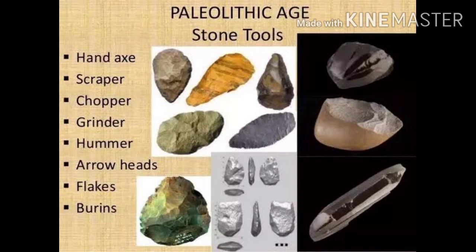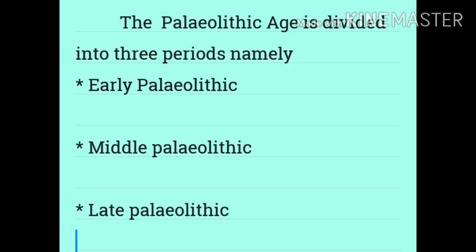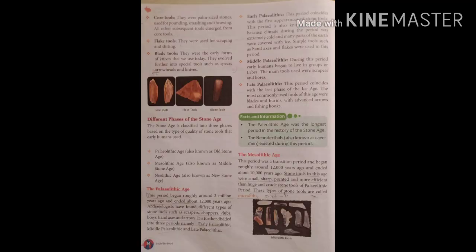The Paleolithic Age is divided into three periods: Early Paleolithic, Middle Paleolithic, and Late Paleolithic. The Early Paleolithic period coincides with the first appearance of stone tools. This period is also known as the Ice Age, because during this time the climate was extremely cold and many parts of the earth were covered with ice. Simple tools such as hand axes and flakes were used during this period.